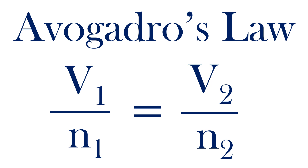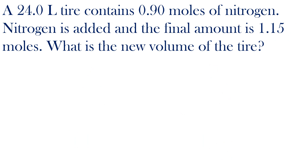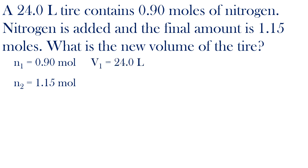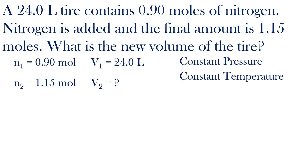Let's do an example. A 24.0-liter tire contains 0.90 moles of nitrogen. Nitrogen is added, and the final amount is 1.15 moles. What is the new volume of the tire? The initial and final moles of nitrogen are given in the problem, the initial volume is given, and I'm looking for the final volume. Pressure and temperature are not mentioned, so I'll assume they are constant and use Avogadro's Law.